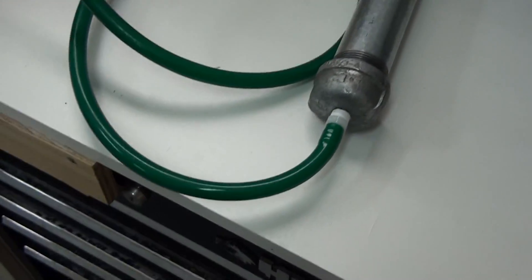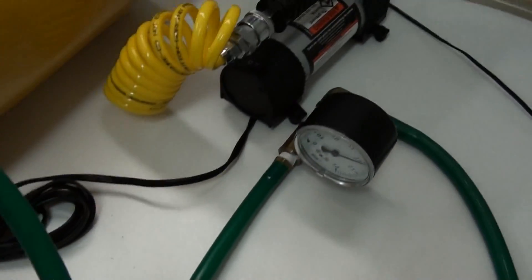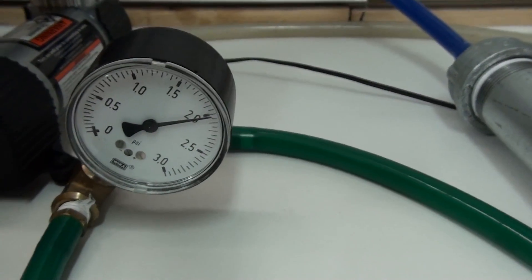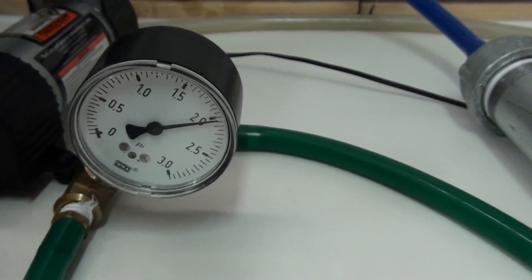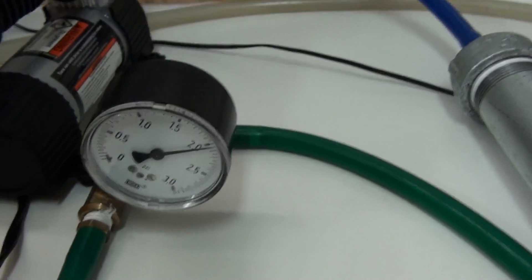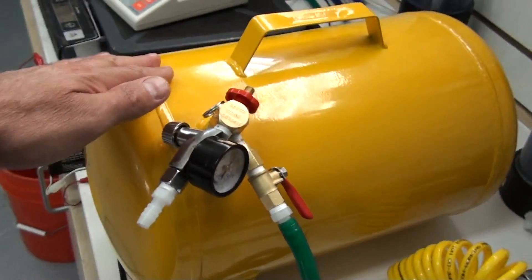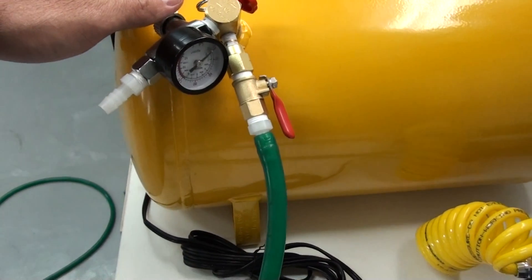And then out of there we've got it going into a pressure gauge. Right now you can see I've got 2 psi of hydrogen. The reason why there's 2 psi is because out of that it goes into a storage tank.